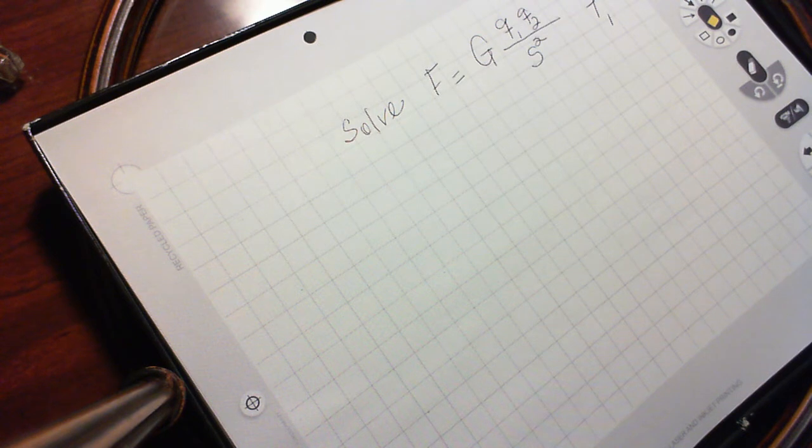Now this is not too bad, but we have to be a little careful here. The first thing I'm going to do, I'm going to get rid of the denominator. How do I do that? I multiply both sides by s squared.